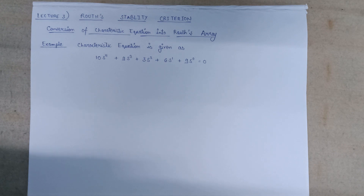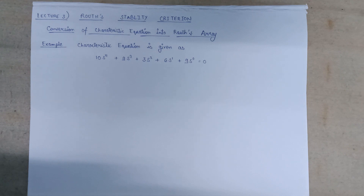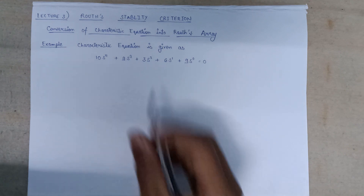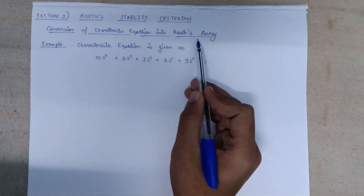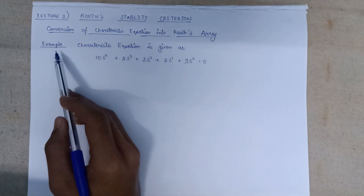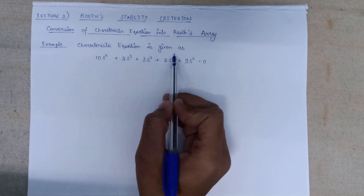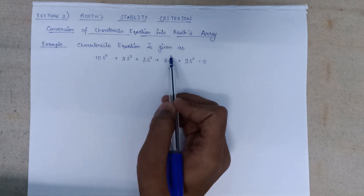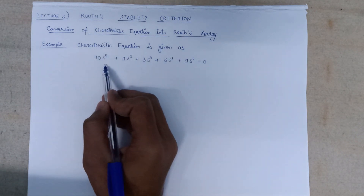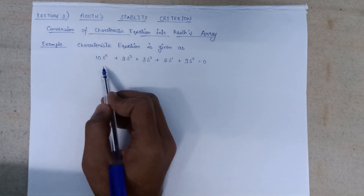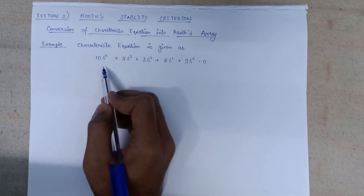In this lecture, we are going to discuss about the conversion of the characteristic equation into the Routh array. Here we take an example in which the characteristic equation is given, and we simply need to form a Routh array based on this characteristic equation.